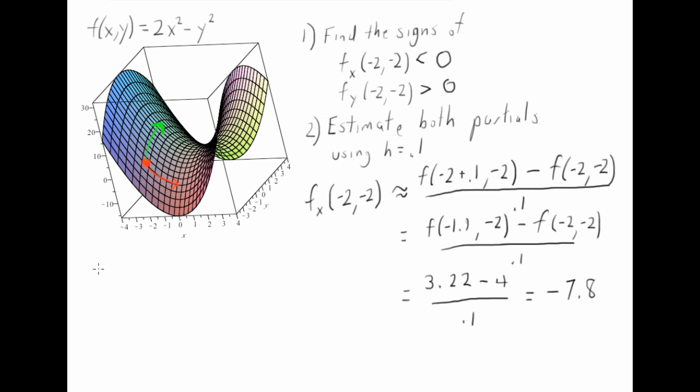We can do this again, finding the partial with respect to y. And what we're going to do is we're going to say, alright, now I'm changing my y component a little bit. So it's -2 plus 0.1 with respect to y, minus f(-2, -2). Let's just be careful here. These two calculations are separate.